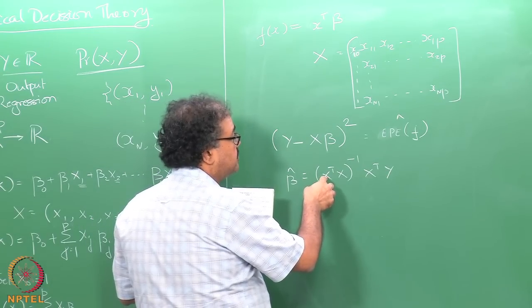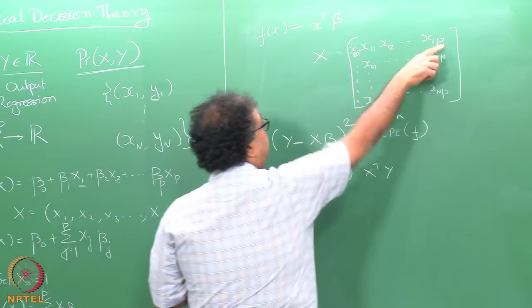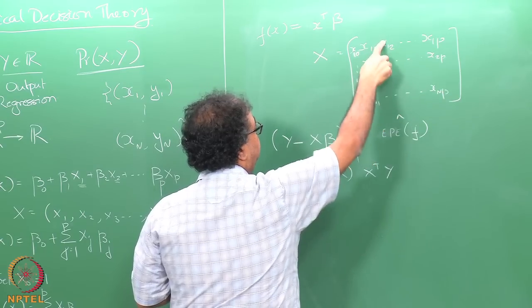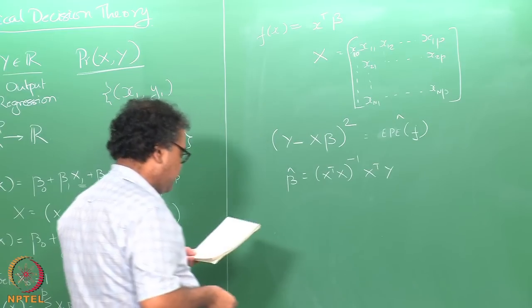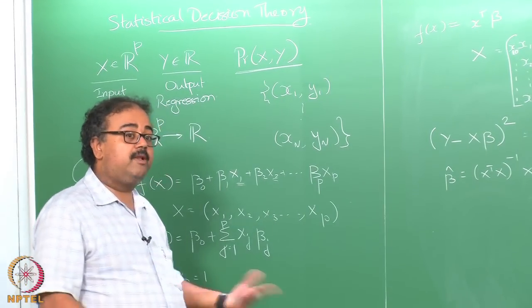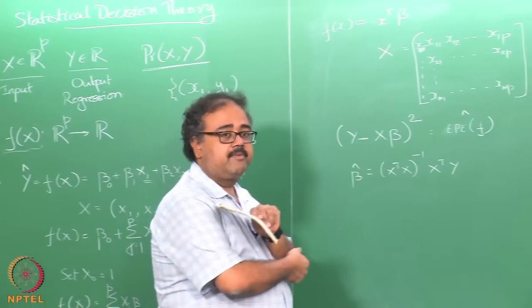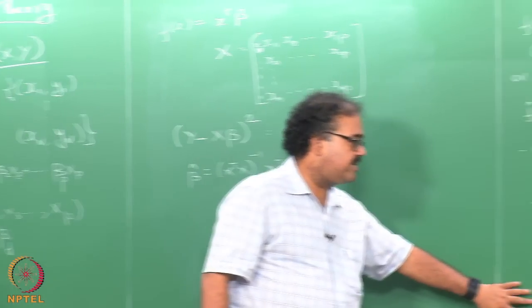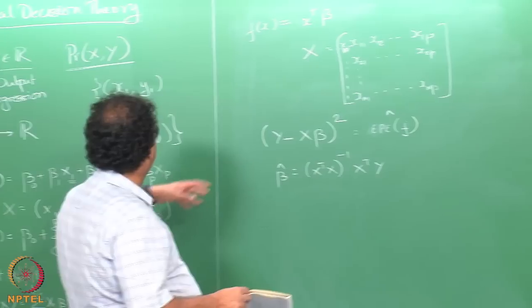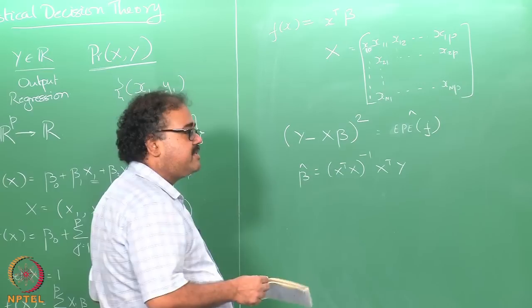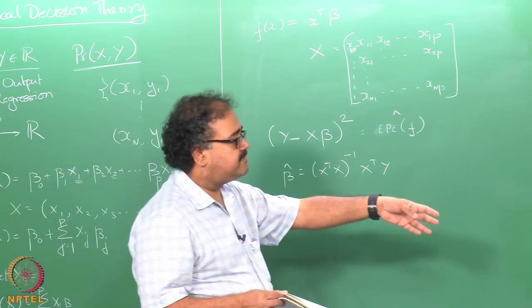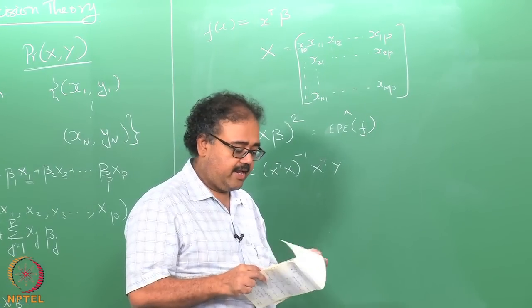In the matrix X, columns represent features (age, income, etc.) and rows represent individual data points. Minimizing the squared error yields β-hat = (XᵀX)⁻¹Xᵀy. So we started with the same objective — minimize expected prediction error — and made different assumptions: a globally linear assumption gives linear regression, while a locally constant assumption gives k-nearest neighbors.